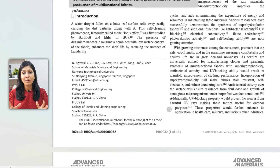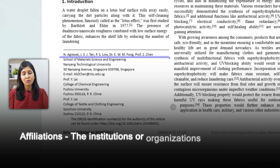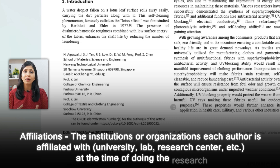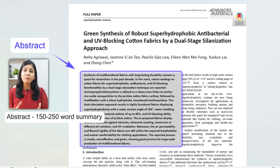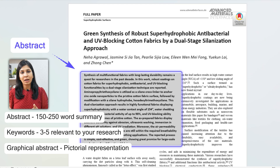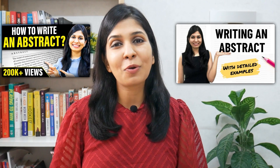After that, you will list down all the affiliations — basically the institutes or organizations the authors were affiliated with, be it a university, lab, or research center, and the time the research was conducted. If authors belong to different institutes, that is usually showcased with the help of a superscript number or a symbol. After that comes the abstract, where in 150 to 250 words you summarize your entire paper and also add 3 to 5 relevant keywords. Some journals might also ask you to submit a graphical abstract, which is basically a pictorial representation of the abstract you've written.